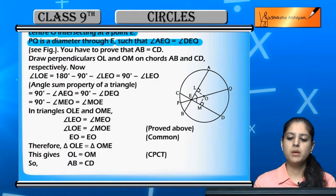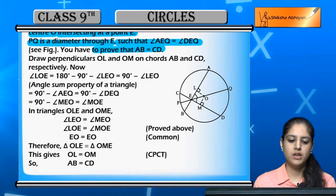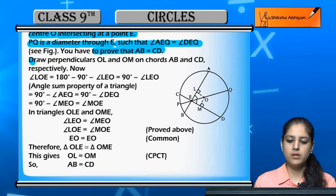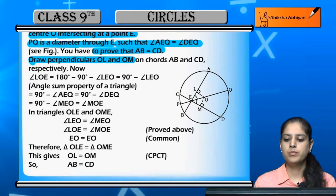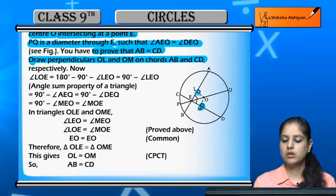We have to prove that both chords are equal. We draw two perpendiculars OL and OM from center O to chords AB and CD respectively.